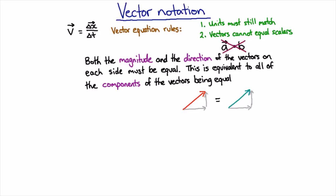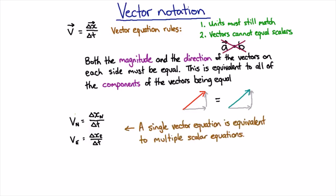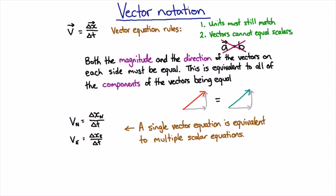For our velocity definition, we might say that the velocity in the north direction is equal to the change in position in the north direction divided by the time taken. And we'd also say that the velocity in the east direction is equal to the change in position in the east direction divided by the time taken. So one vector equation is equivalent to multiple scalar equations — the velocity in the north direction is just a number, and so is the velocity in the east direction. These are scalar equations.